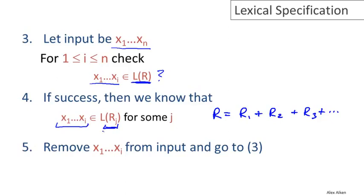So we know that this prefix X1 through XI is in the language of some RJ. And so we know that that's a word in our language is in one of the token classes. And so what we do is we simply delete that prefix from the input. And then we go back to step three and we repeat. And in this way, we keep biting off prefixes of the input. And we'll do this until the string is empty. And then we have lexically analyzed the entire program.